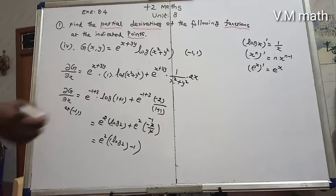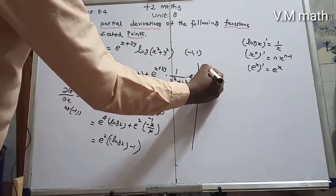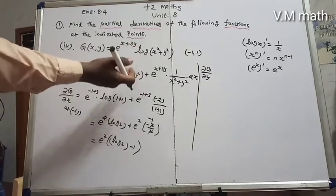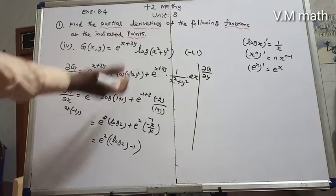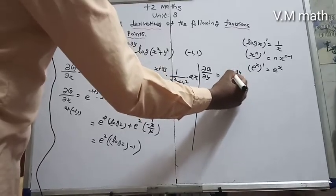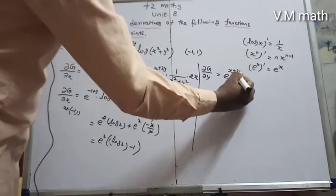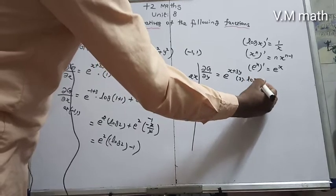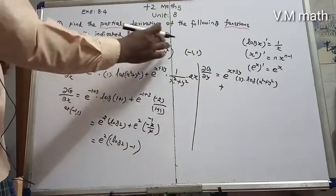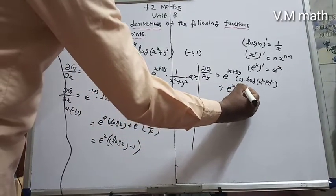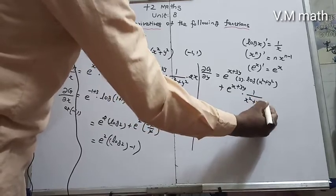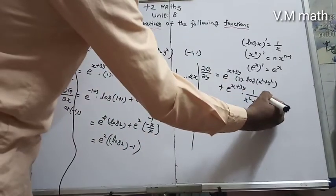Next, partial differentiation with respect to y: dg/dy, the partial derivative of g with respect to y. Here y is the variable. We apply the product rule to e^(x+3y) times log(x² + y²). Differentiating: e^(x+3y) times the derivative of log(x²+y²) — which is 1/(x²+y²) times 2y — plus log(x²+y²) times the derivative of e^(x+3y) with respect to y.